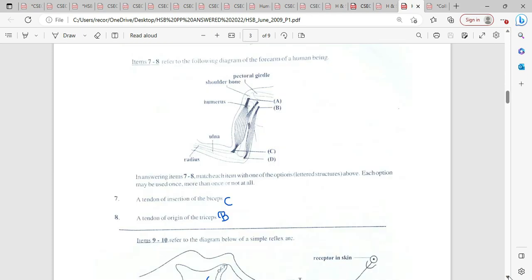Item 7 to 8 refers to the following diagram of a forearm of a being. Now we are tasked with, in answering items 7 to 8, matching each item with one of the options lettered structure above. Each option may be used once, more than once, or not at all. A tendon of insertion of a bicep. Remember now, insertion is the place that you move from more often. An origin is where you actually started from. It doesn't move.